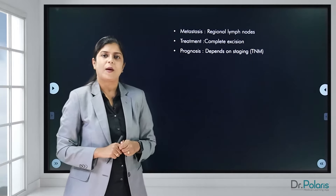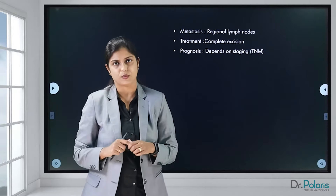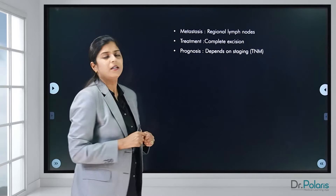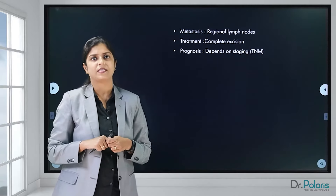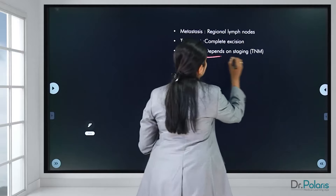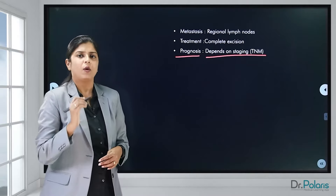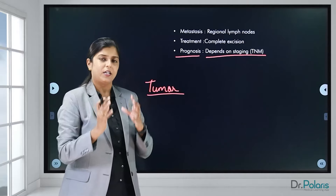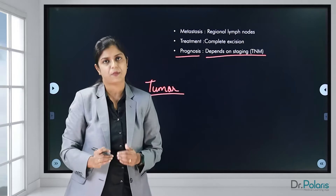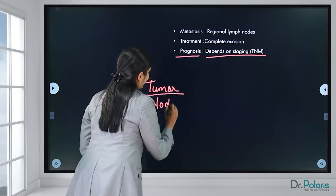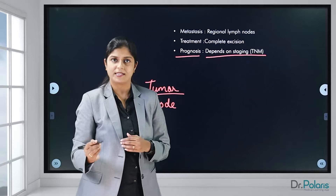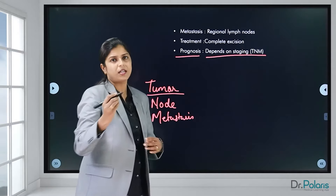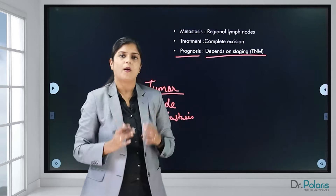Squamous cell carcinomas can metastasize to regional lymph nodes — for example, an SCC on the leg can spread to inguinal lymph nodes. Treatment is usually complete excision. Prognosis depends on TNM staging: T stands for tumor (size or depth of infiltration), N for lymph node metastasis (present or not), and M for distant metastasis — to liver, bone, lungs, or elsewhere.